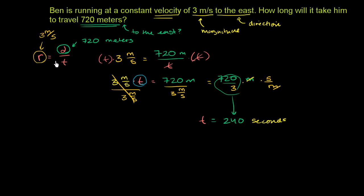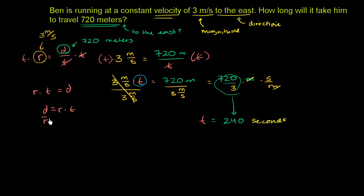We could have multiplied both sides by time first to get distance equals rate times time. That's the standard formula for motion. Then dividing both sides by rate gives time equals distance divided by rate — exactly what we got. So 720 meters divided by 3 meters per second gives a time of 240 seconds.